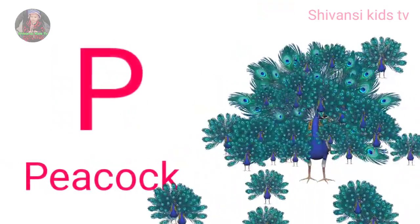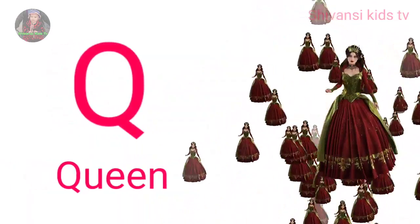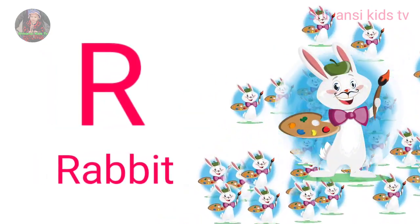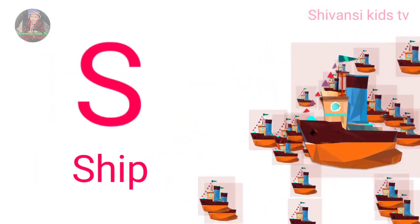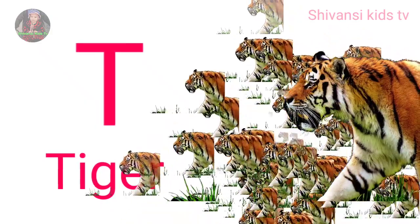P for peacock, Q for queen, R for rabbit, S for sheep, T for tiger.